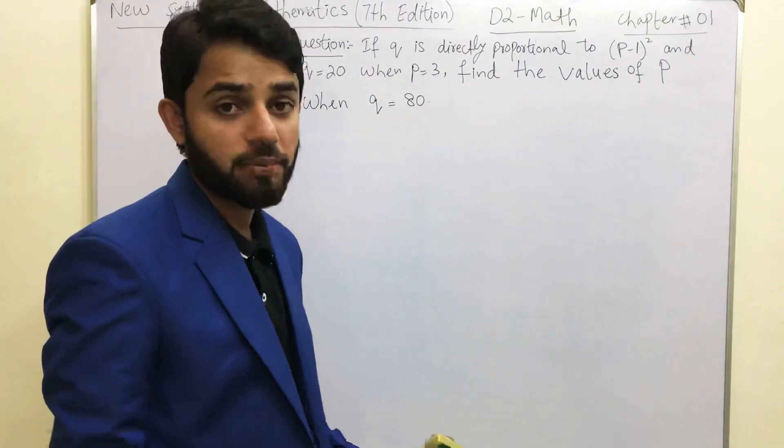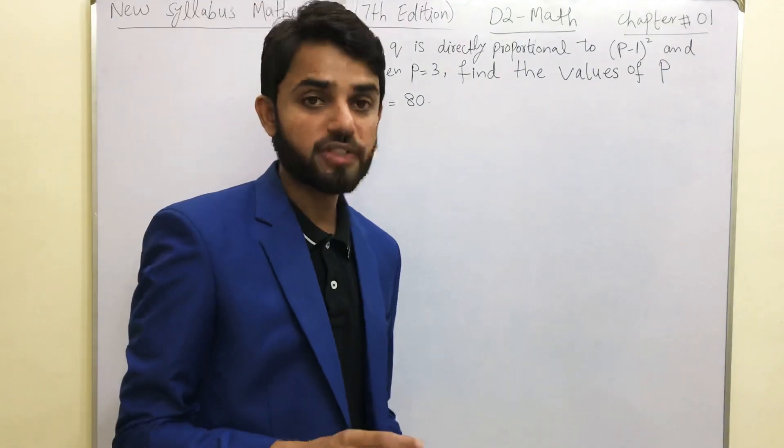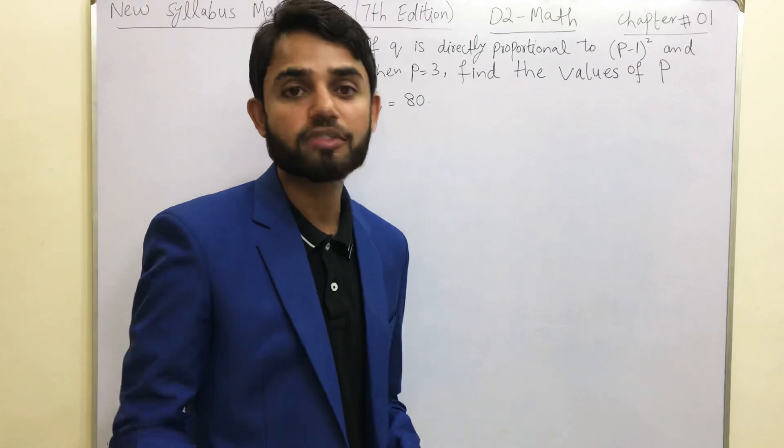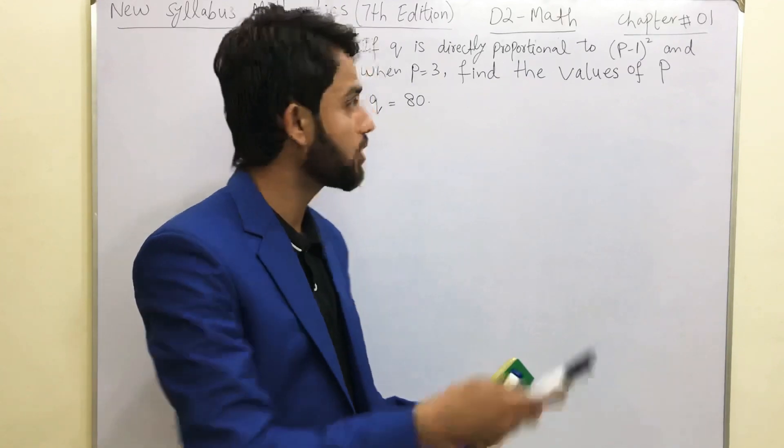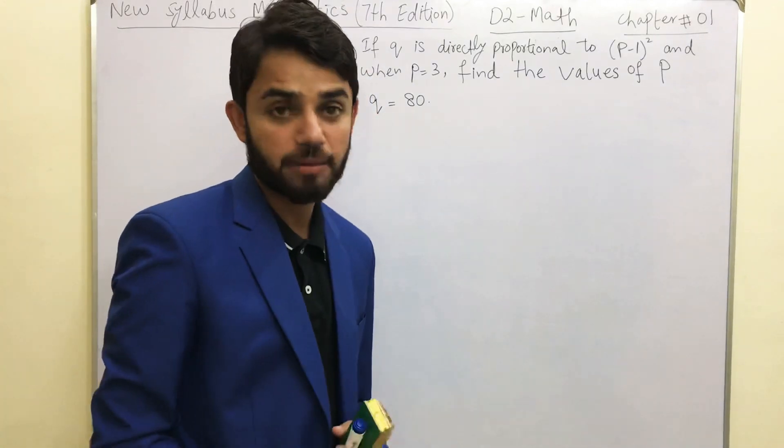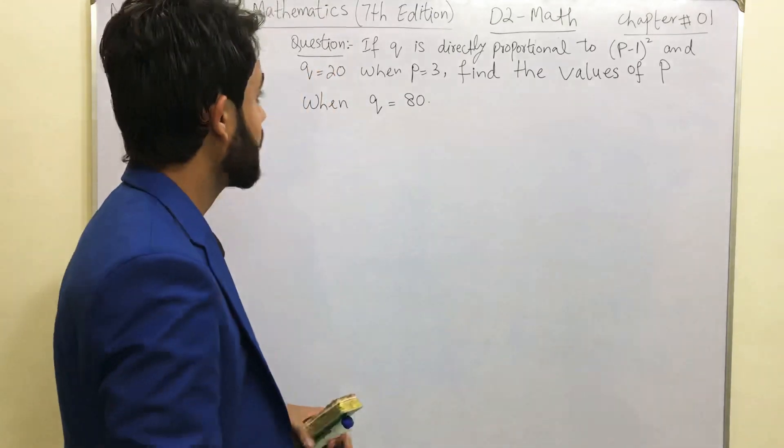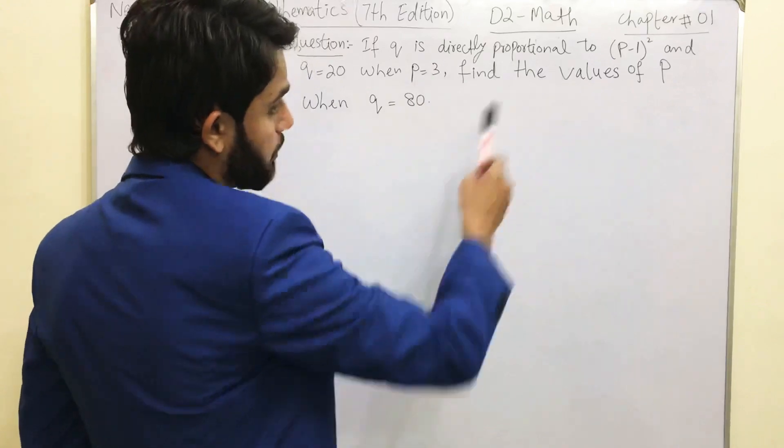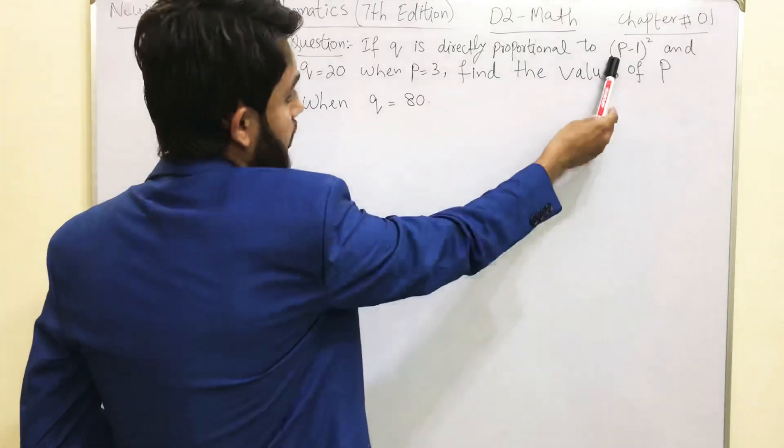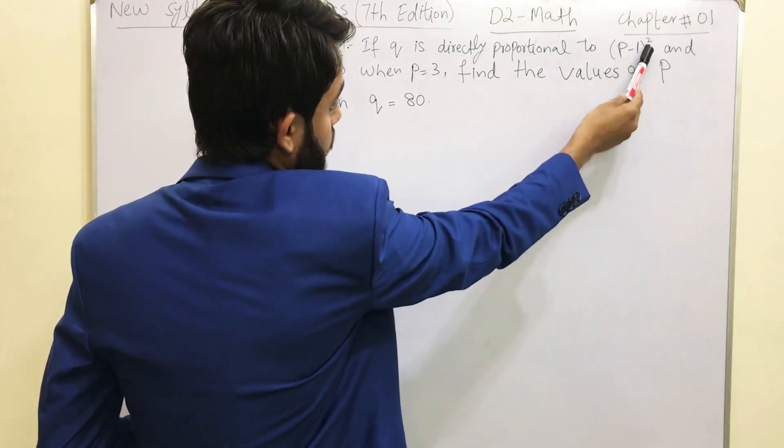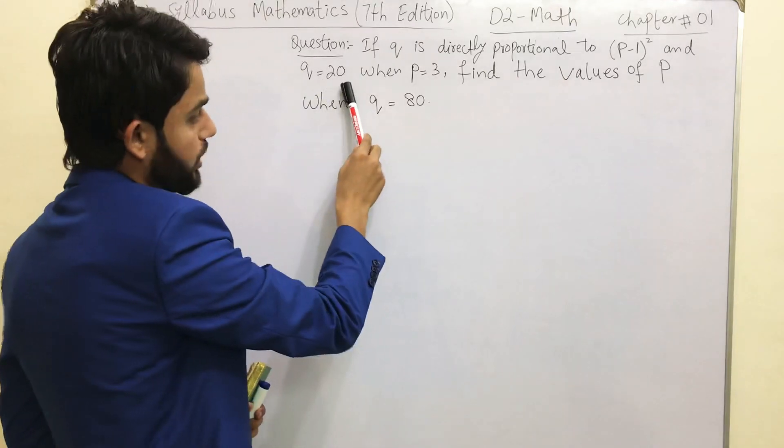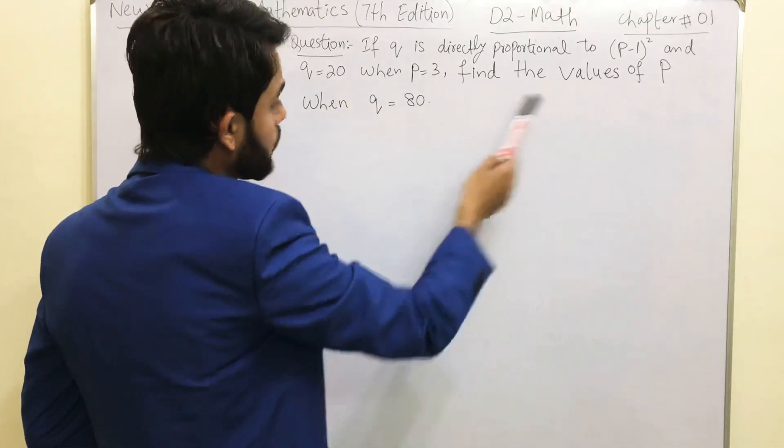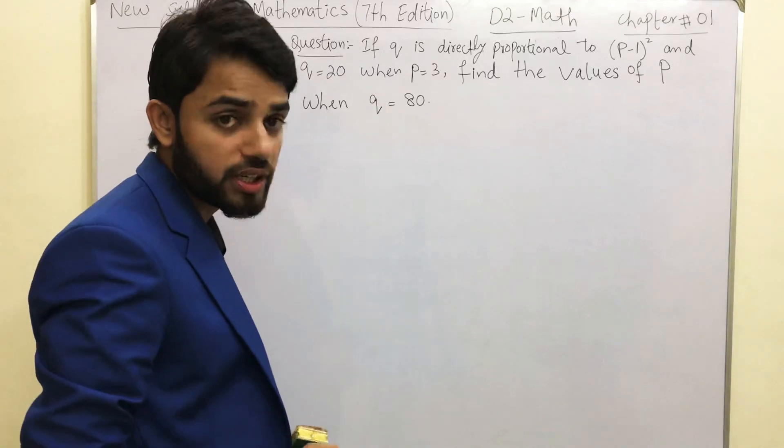If you have watched my previous video, then I am positive that you do have some concept of direct proportion, because this question belongs to the direct proportional topic. The question reads: If Q is directly proportional to (P-1)² and Q equals 20 when P equals 3, find the values of P when Q equals 80.